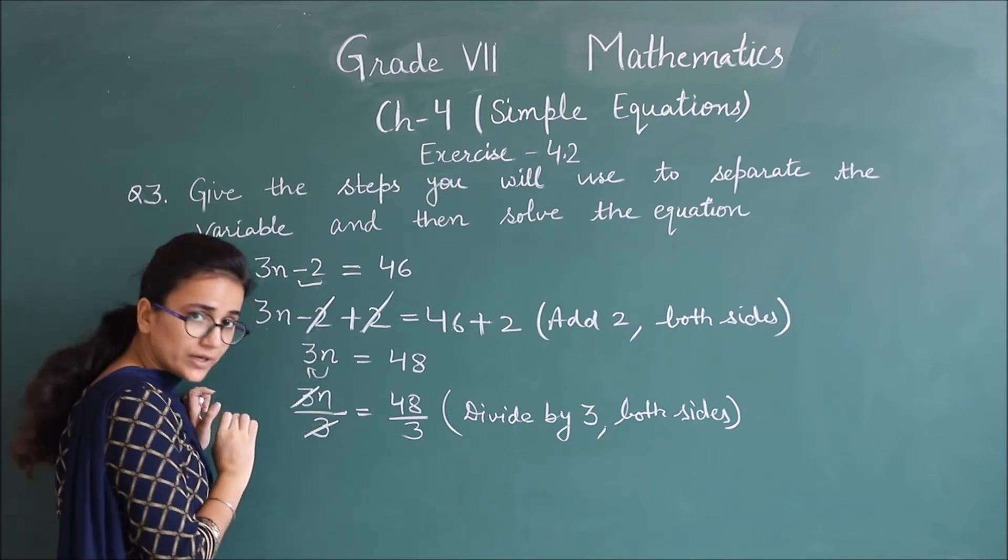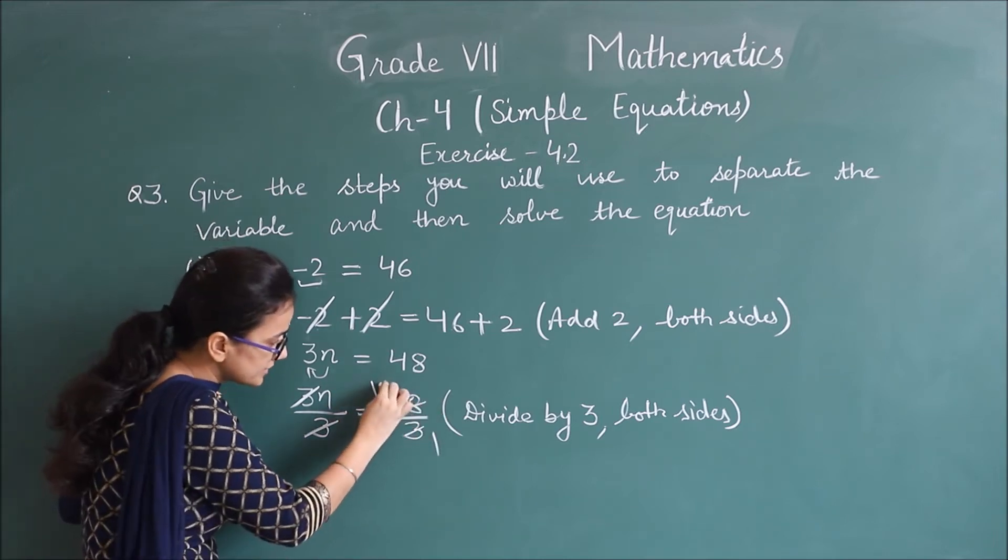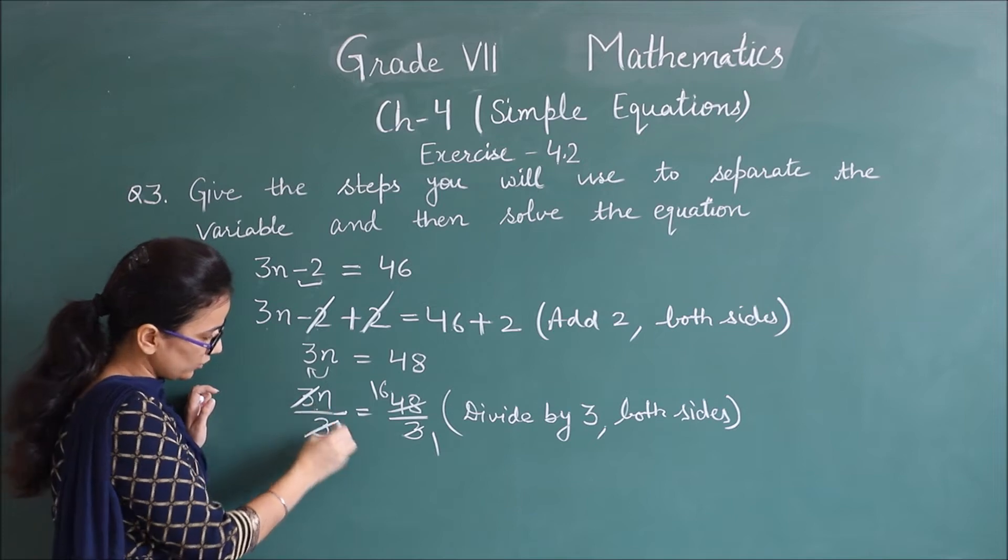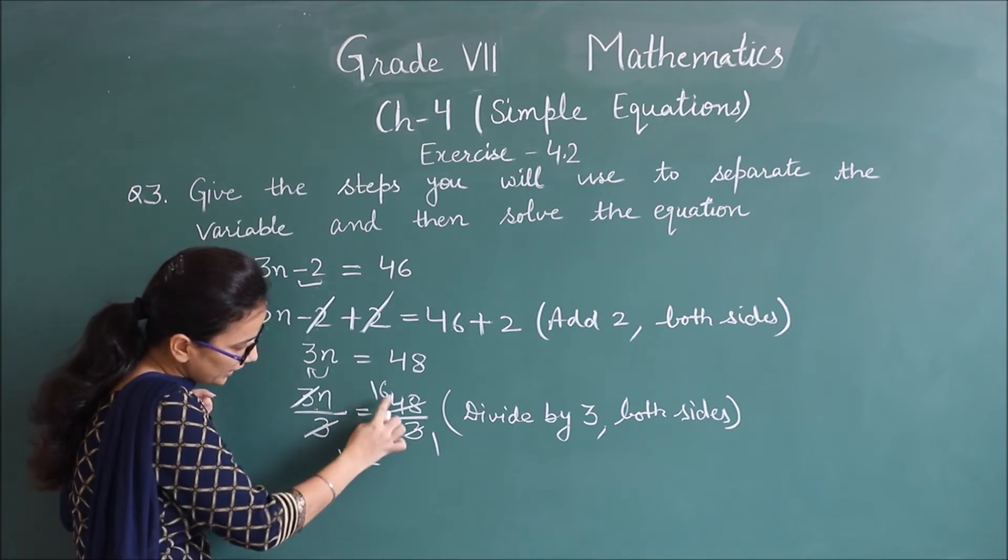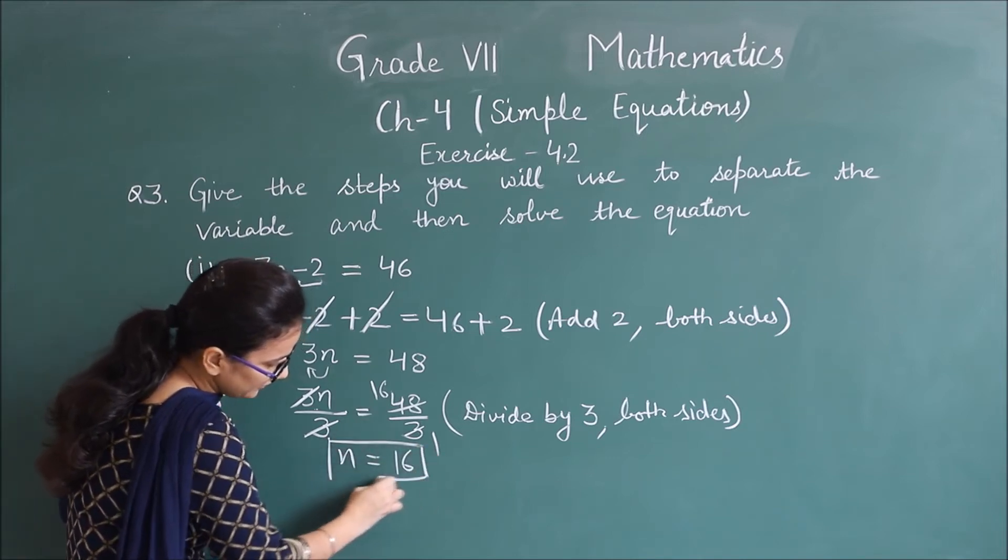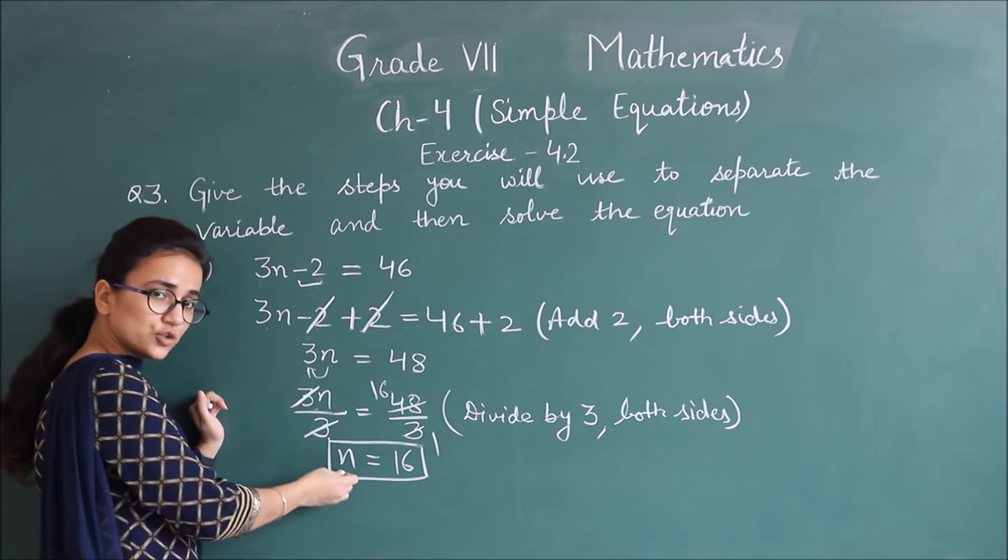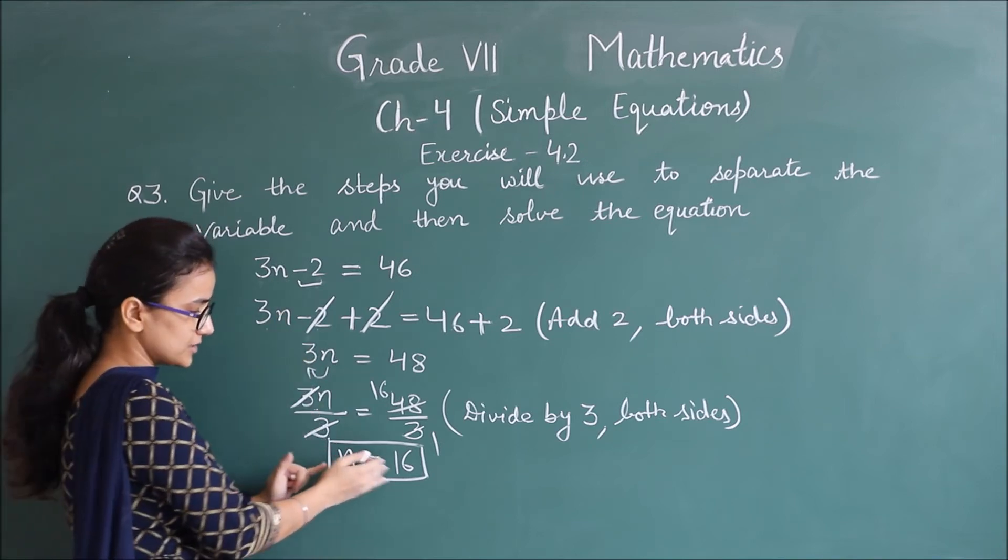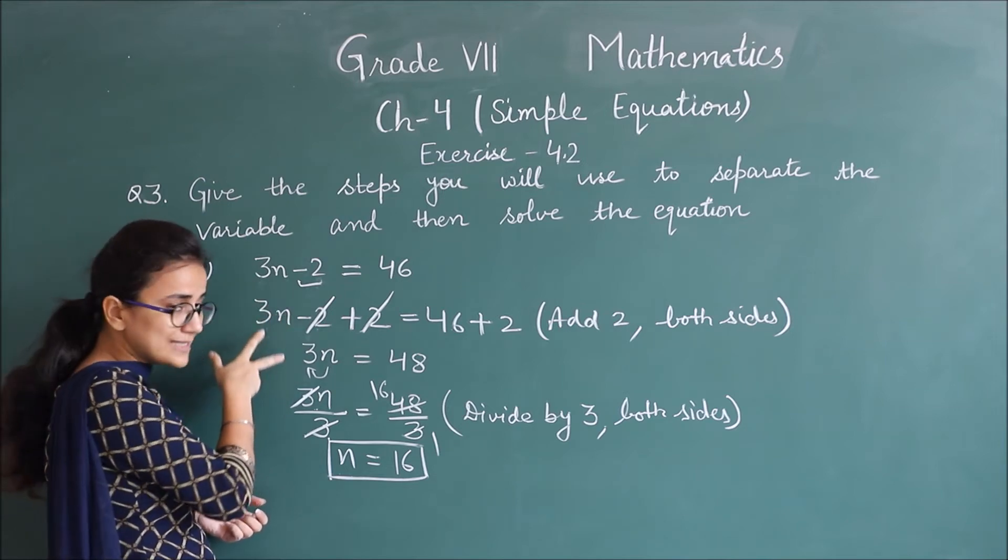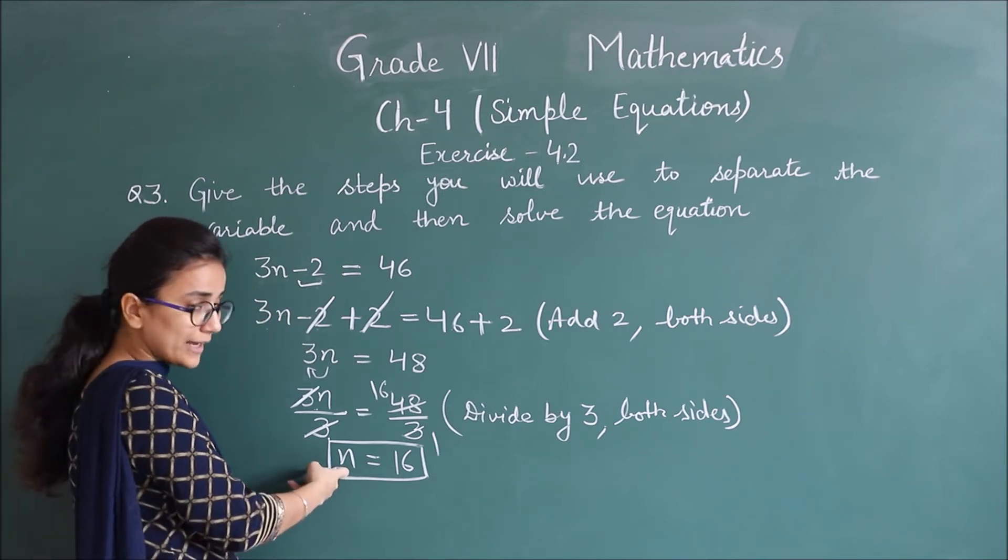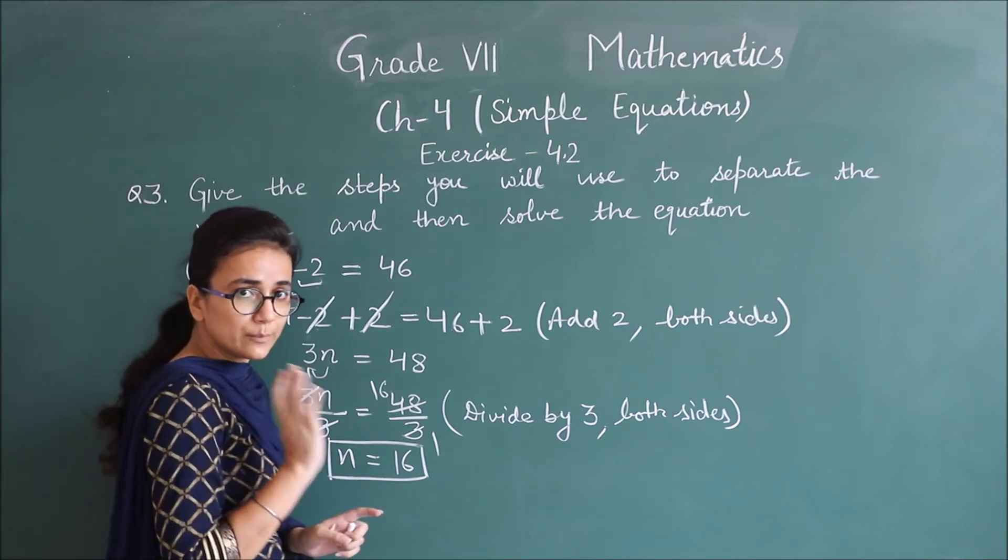Now 3 and 3 cancel. 3 ones are 3, 3 sixes are 18. So what's remaining here? Only n, variable is separated. And equals to? 16. So the value of n is 16. Clear? Solution of this equation, that is n equals 16. Separate the variable step by step, and in the end we'll get the value separated. In similar way you can do other parts of question 3.